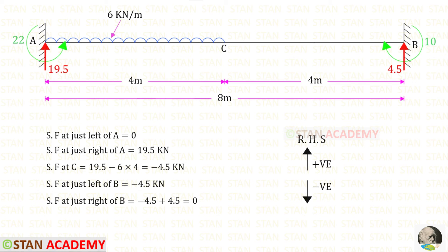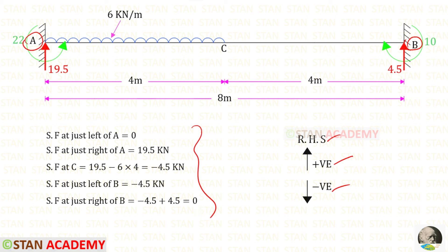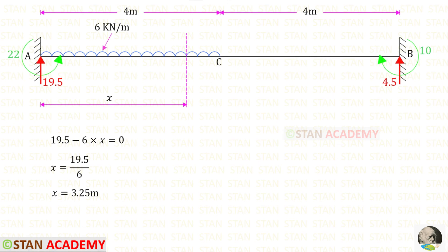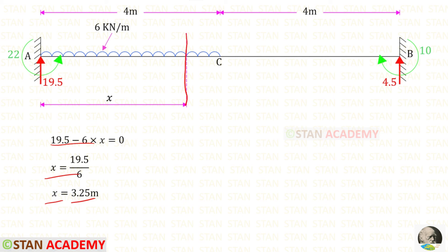Now we can draw the shear force diagram. Finding shear force values from point A towards point B using the right hand side rule — upwards positive, downwards negative. The shear force diagram shows a point where the shear force becomes zero. At this point there will be the maximum positive bending moment. Making a section at distance x from point A and applying the zero shear force condition, we get x equal to 3.25 meters.